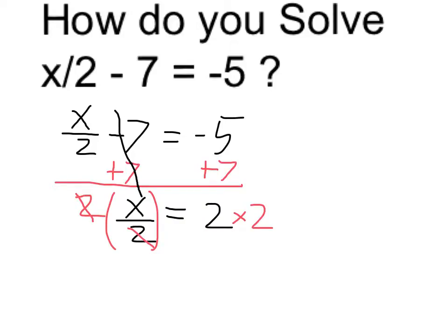2 over 2 is just 1, leaving me with x, and that's equal to 2 times 2, which is 4. I therefore propose my answer is 4.